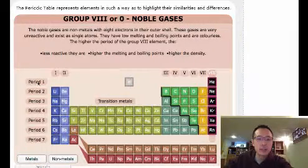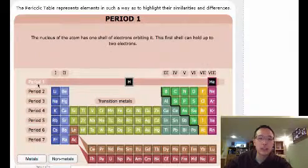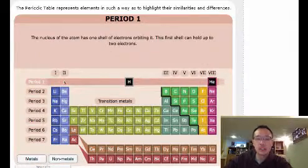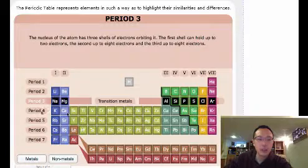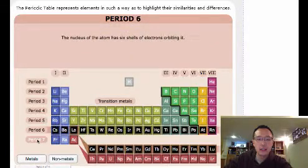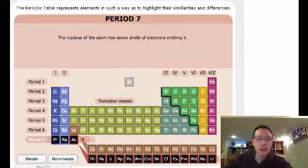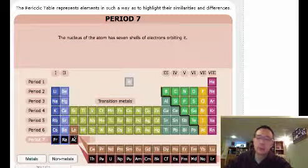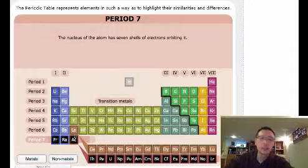If you look at these ones, you have your 7 periods. So that's period 1. These periods are actually going across — period 2, 3, and then 4, 5, 6, and 7. These ones are actinides and lanthanides, which we'll talk about — I don't think we'll get into those ones here.